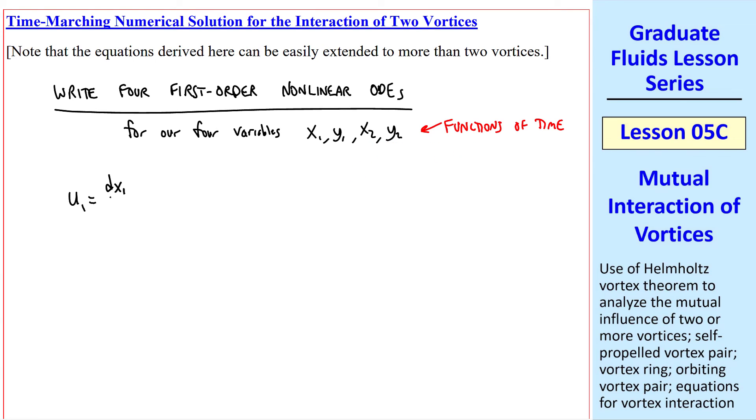I'll write u_1. My definition is dx_1/dt. And from our equations above, this is gamma_2 over 2 pi, y_2 minus y_1, divided by r squared. Remember that we wrote r squared as x_2 minus x_1 squared, plus y_2 minus y_1 squared. This equation is nonlinear because of these squared terms.